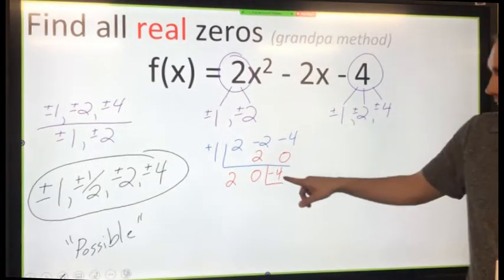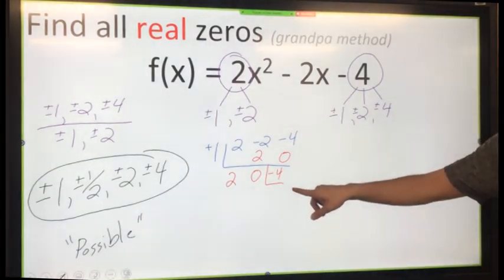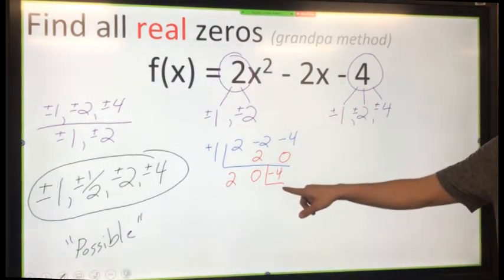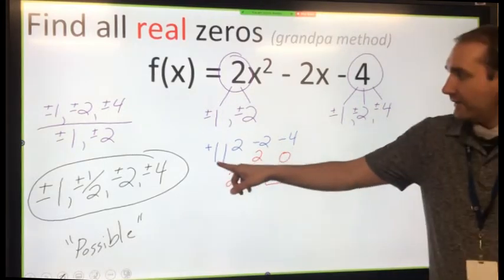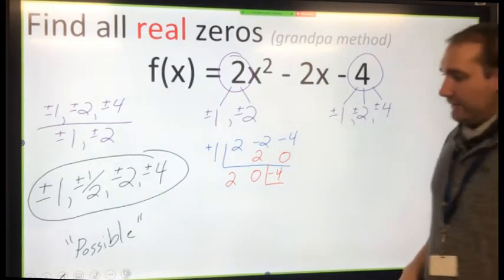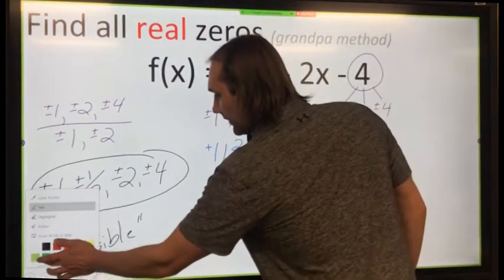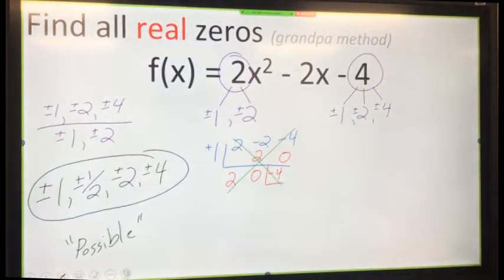So I get a remainder of -4, which means, is 1 an x-intercept for this polynomial? Is this a zero with a remainder? Like I said, it is not a zero because we are looking for a remainder of 0. That means that zero goes in evenly into here. Since it doesn't, since I have a remainder, it is not one of our zeros, which means I have to pick another number.